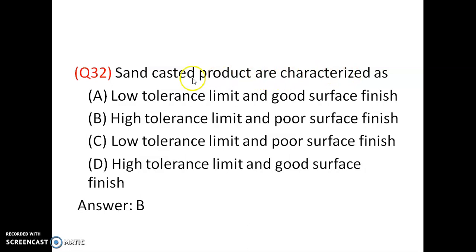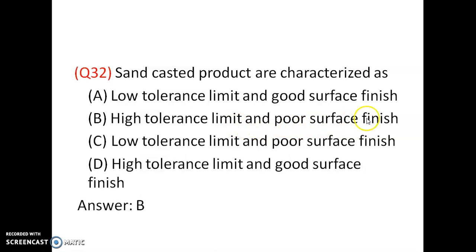Sand cast products are characterized by lower accuracy and very poor surface finish. They also have a high tolerance limit. Machined and ground components have lower tolerance limits. Sand cast products have higher tolerance limits, and after casting, machining is required to get a higher surface finish.